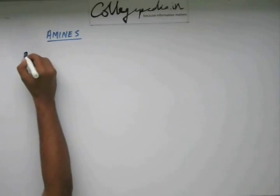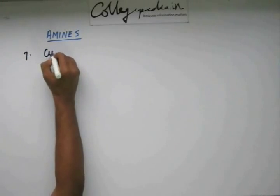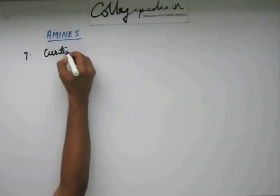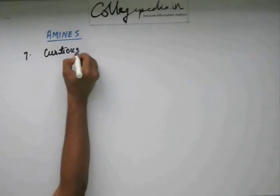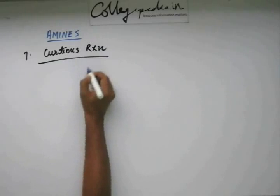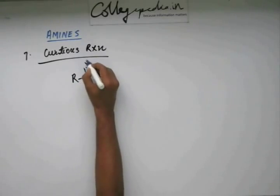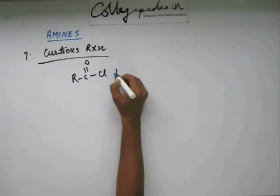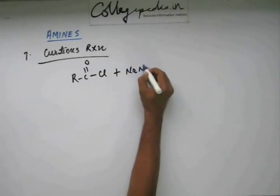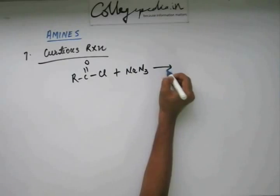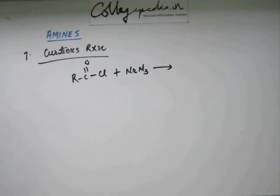Reaction number 7 in my list is Curtius reaction. In Curtius reaction what happens? You start with acyl chloride and you take sodium azide. Then you get something.